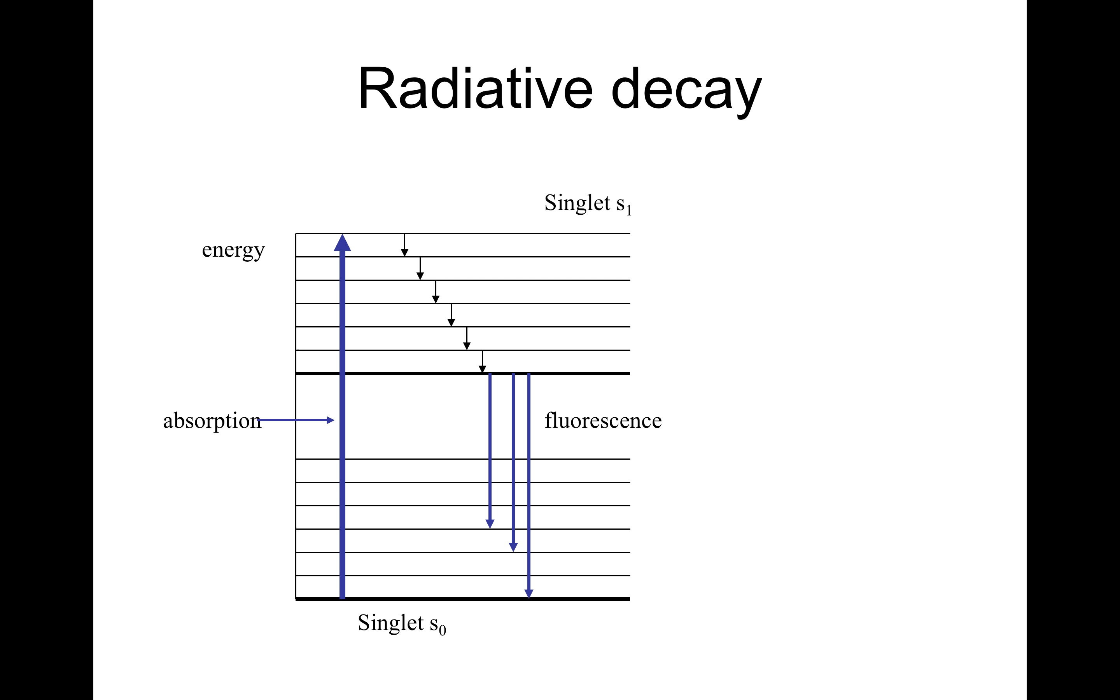Here is the diagram to show how fluorescence occurs. In singlet S0, absorbs energy and becomes excited and goes to singlet S1. So that is absorption. Then may leak downwards by step and so on. It continues to leak until it gets to the lowest vibrational level of S1.